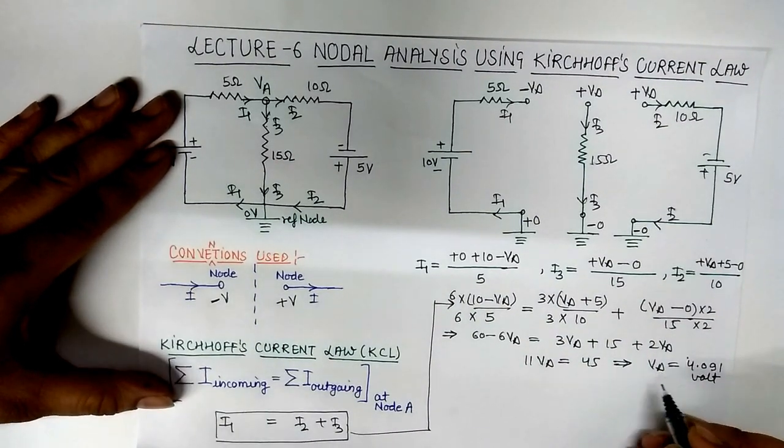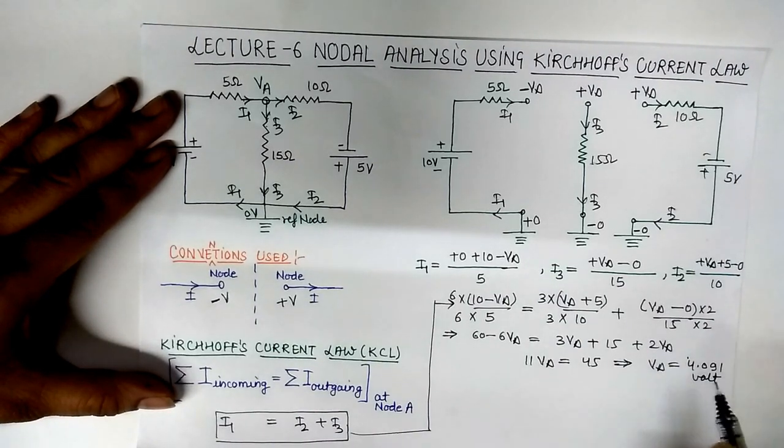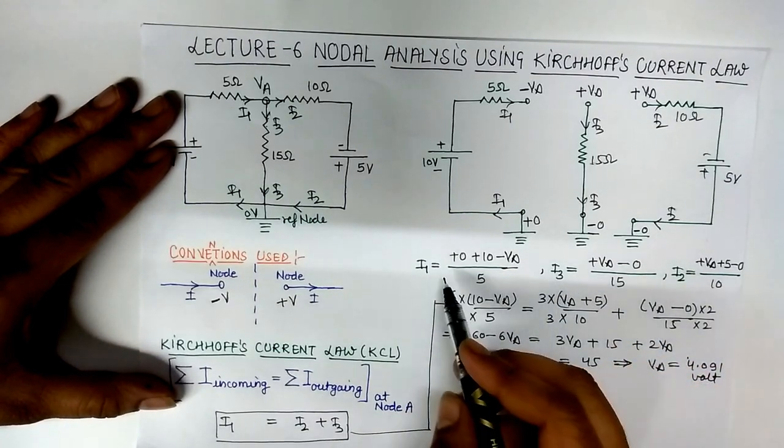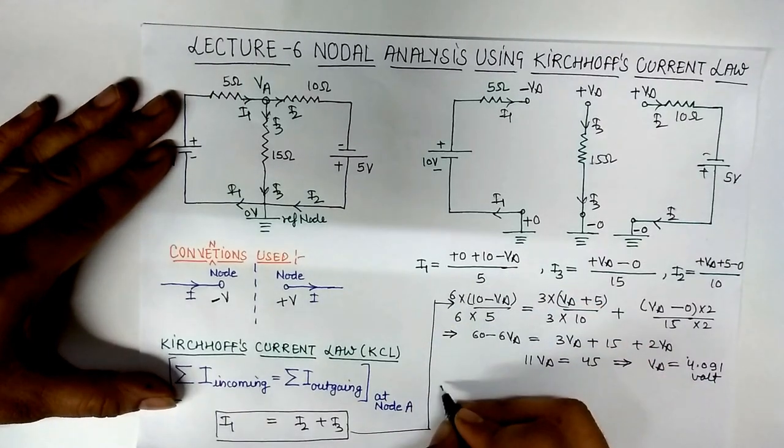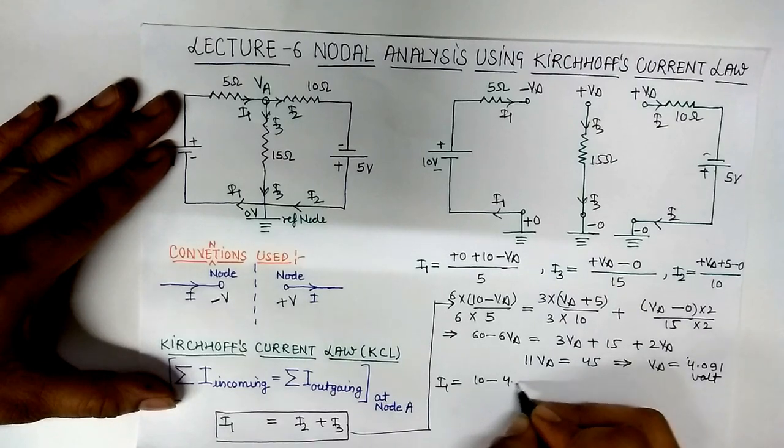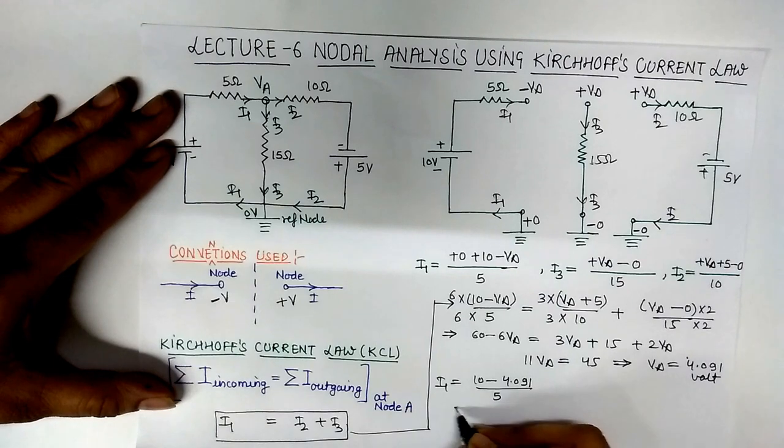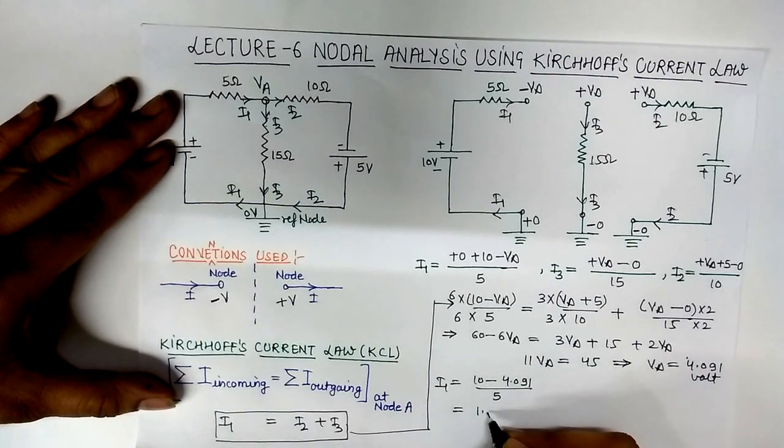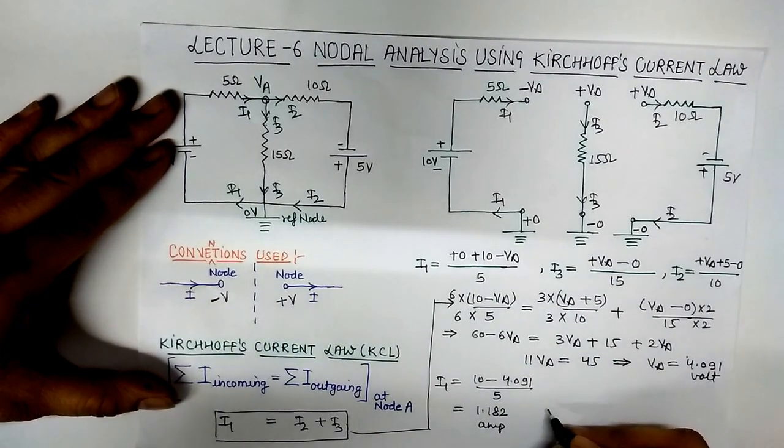So if we denote this VA, now if VA is inputted in this equation I1, I2, and I3, so we find out the current I1, I2, I3. So we put this VA in here: I1 is equal to (10 minus 4.091) upon 5. So this is, after solving this, it will be 1.182 amperes.